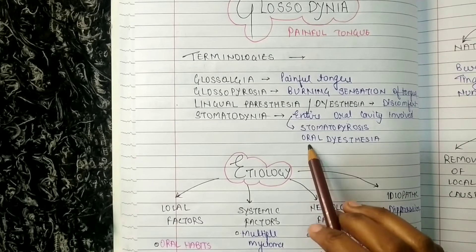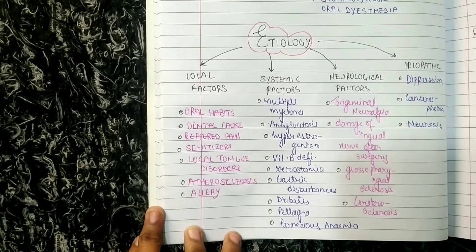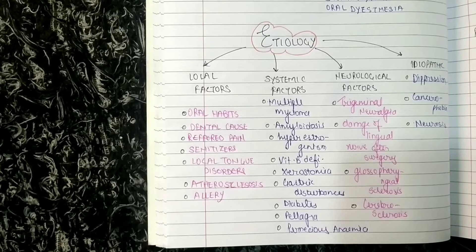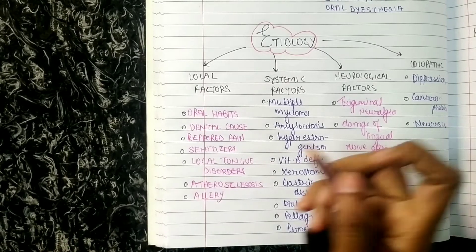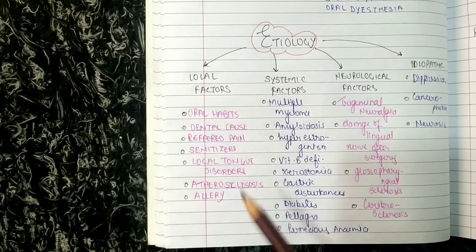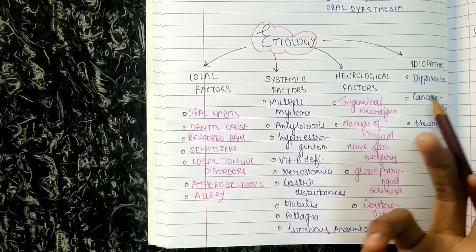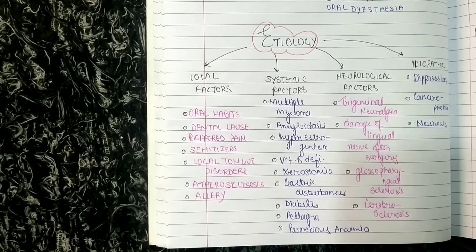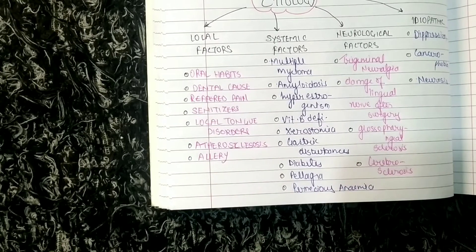Coming to etiology, we look at local factors first. Local factors include oral habits such as tobacco smoking and alcohol. Dental causes can be there, referred pain, use of sanitizers, and local tongue disorders — for example, median rhomboid glossitis. If a patient has median rhomboid glossitis, they may also develop glossodynia as the tongue will be painful. Atherosclerotic changes and allergy can also lead to glossodynia.